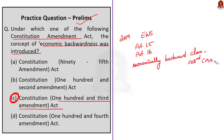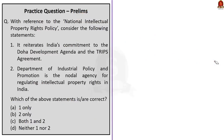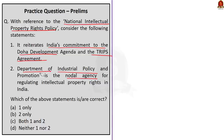Now let us see the second prelims question, which is based on the National Intellectual Property Rights Policy. With reference to the National IPR Policy, consider the following statements: Statement 1 — it reiterates India's commitment to the Doha Development Agenda and the TRIPS Agreement. Statement 2 — the Department of Industrial Policy and Promotion is the nodal agency for regulating intellectual property rights in India. In the article discussion we didn't cover the National IPR Policy, so I'll give a brief introduction about the policy and then we'll see which statements are right and which are wrong.